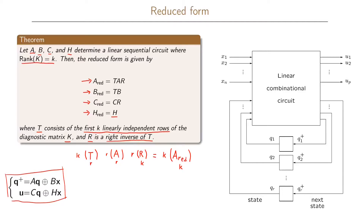To compute the reduced form of the B matrix: we have T, which is a k by R matrix, multiplied by B, which is an R by N matrix, since B maps N inputs to the next state with R variables. The reduced form of B is therefore a k by N matrix.